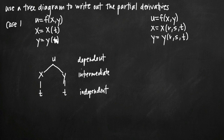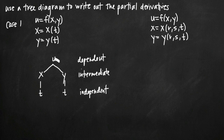Now, if we want to write out a model for the derivative of this multivariable function, we'll write it out in terms of partial derivatives. Because this is a Case 1 type function, we know we're only going to have one partial derivative — the partial derivative of u with respect to t. You always need one partial derivative for every dependent variable in terms of every independent variable. Since we only have one of each, we need just one partial derivative.